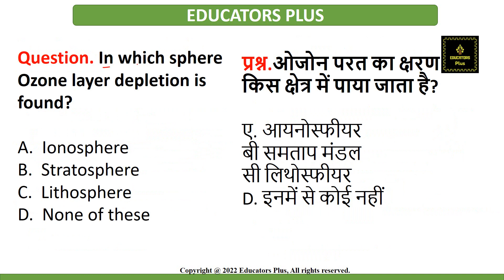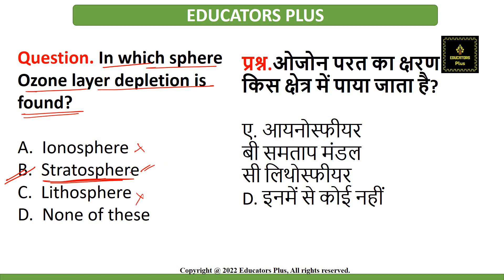The next question is: in which sphere is ozone layer depletion found? The correct answer is option B — stratosphere. Ozone layer depletion is found in the stratosphere, not in the lithosphere or ionosphere.